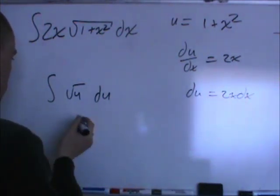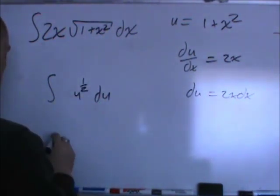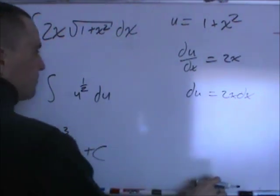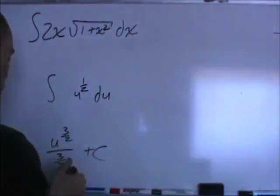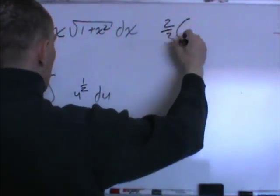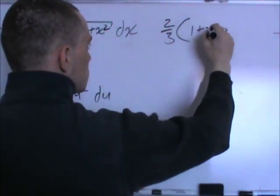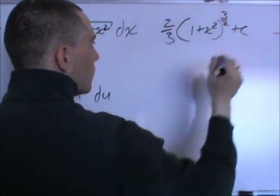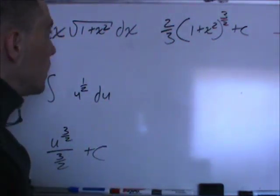That's going to give us, okay, u to the 3 halves divided by 3 halves plus c. And now we'll just substitute everything back in, so that's going to be 2 thirds. Okay, so that's the correct, that's the actual integral here.